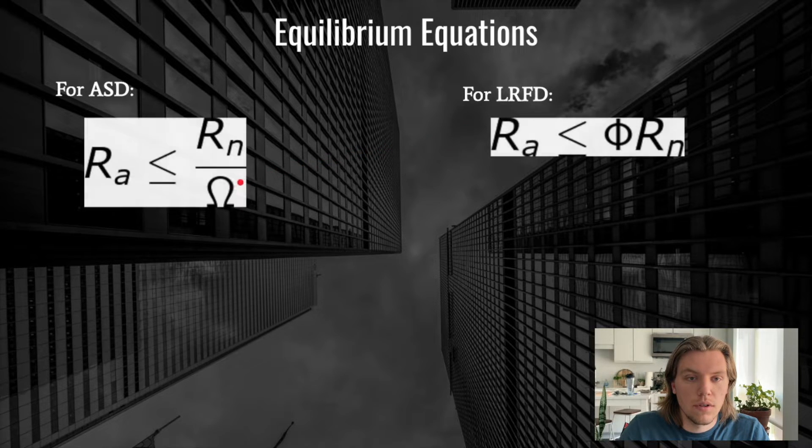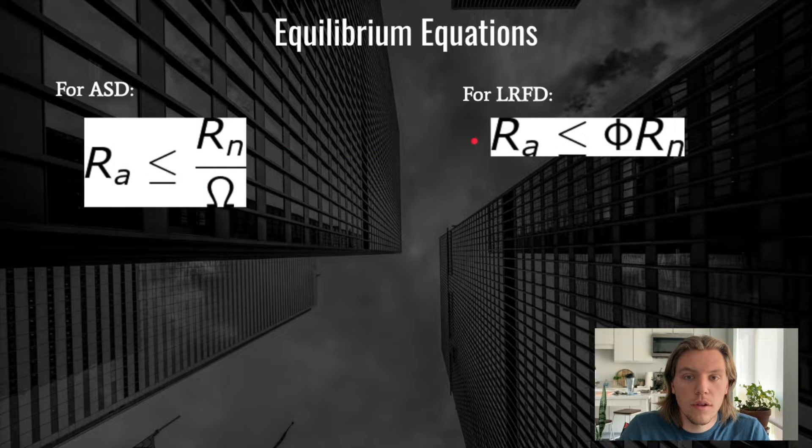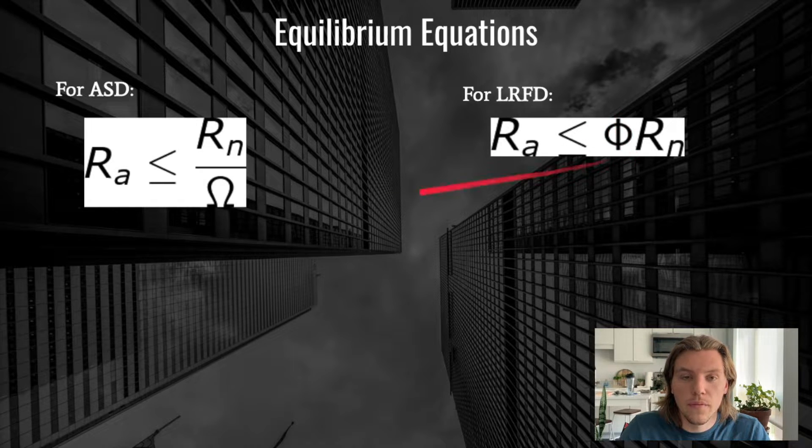So let's take a look at our ASD and LRFD equilibrium equations. You can see that there's some similarities between both. Both sides in LRFD and ASD have Ra, this is our required strength. Similarly with Rn, this is our nominal strength of our member or material. And then the way that they differ is for LRFD we have a design factor phi here, which is multiplied by Rn, and on the ASD side we have omega.